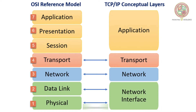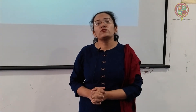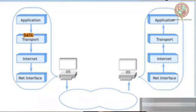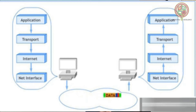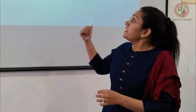The internet layer corresponds to the network layer in the OSI model. It is used to send data using routers and handles proper routing via the IP address or MAC address of the sender and receiver.